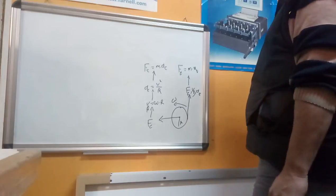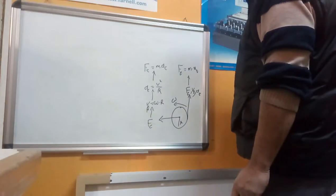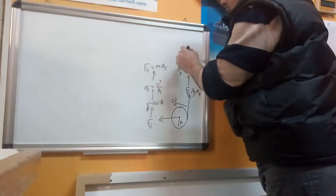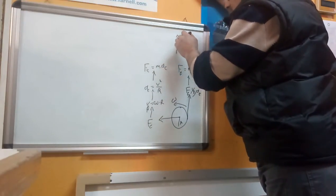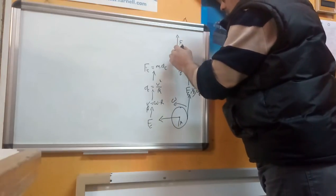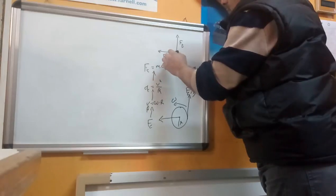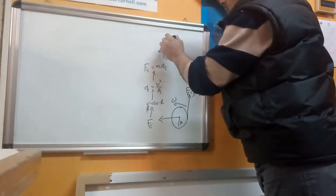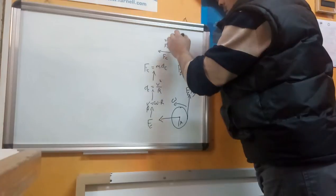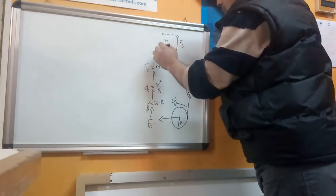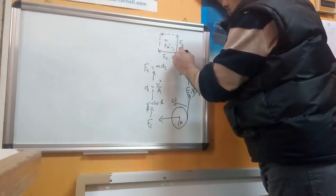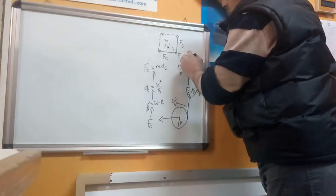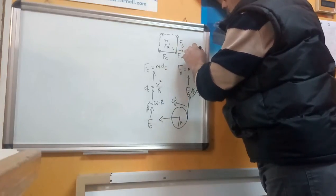This acceleration gives the ball a centrifugal force Fc equal to mass times centrifugal acceleration. The resultant force Fr of the two — the tangential force and the centrifugal force — is Fr equals Ft plus Fc as vectors.